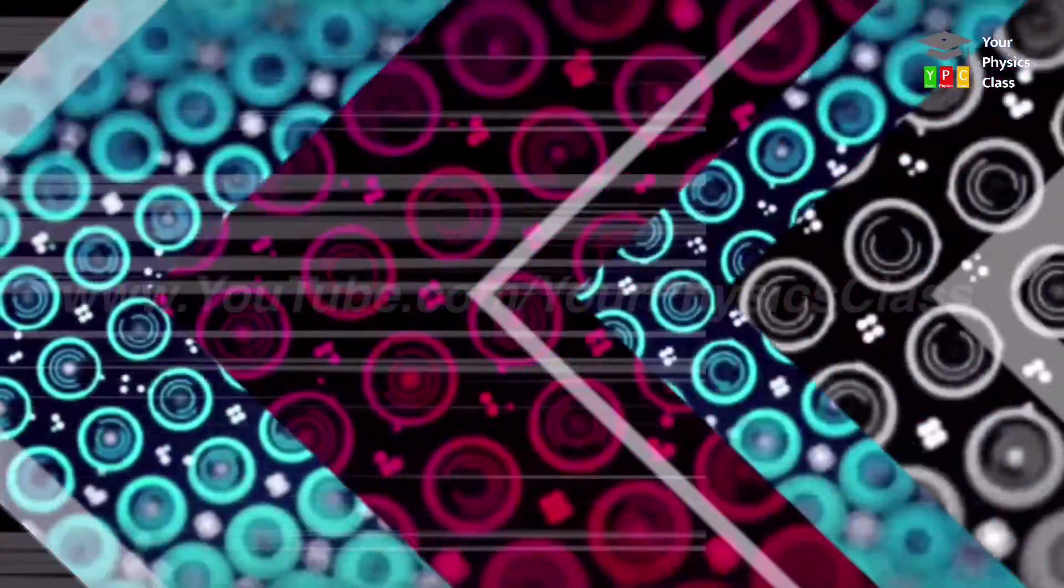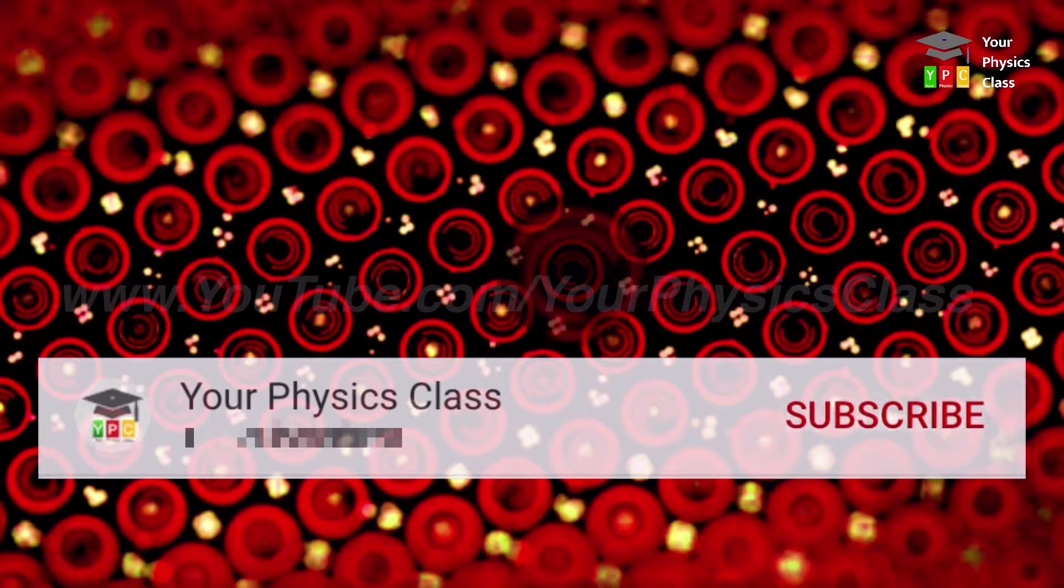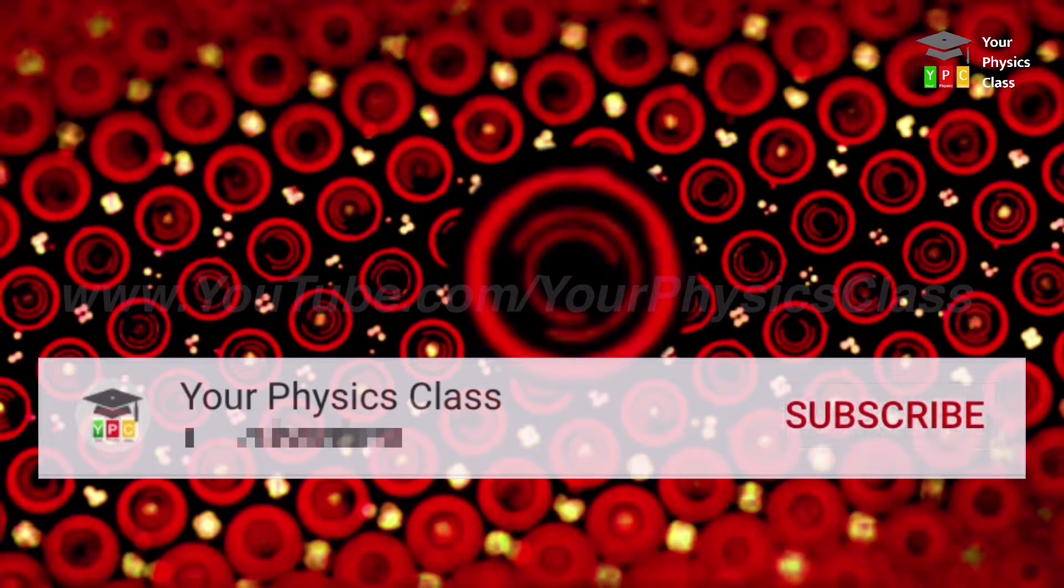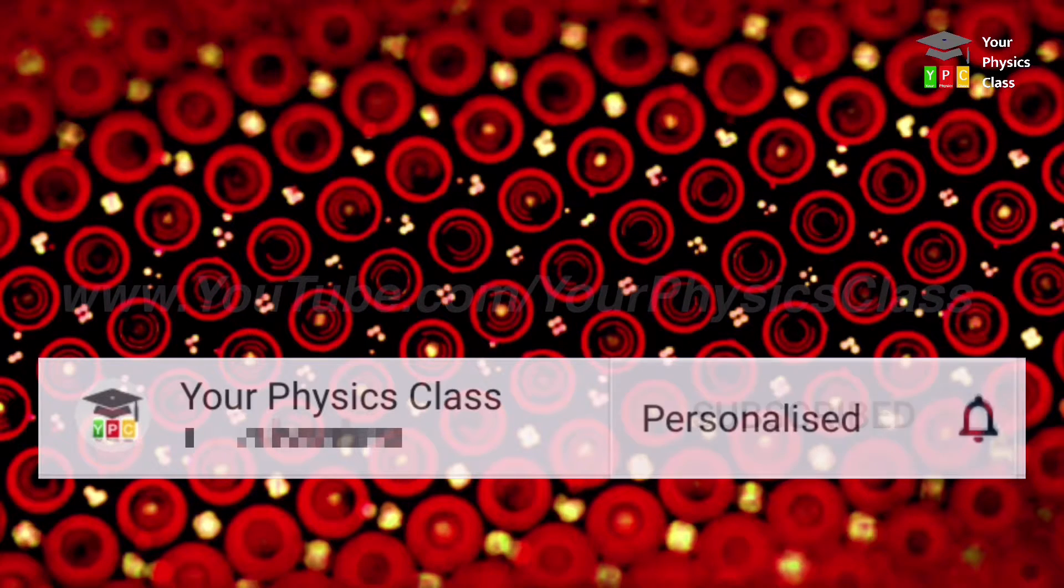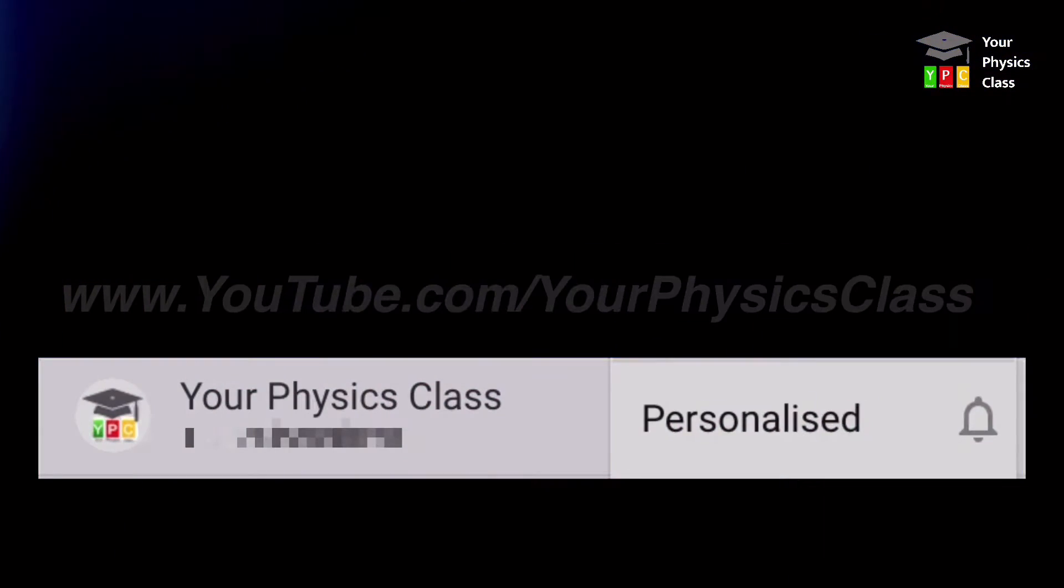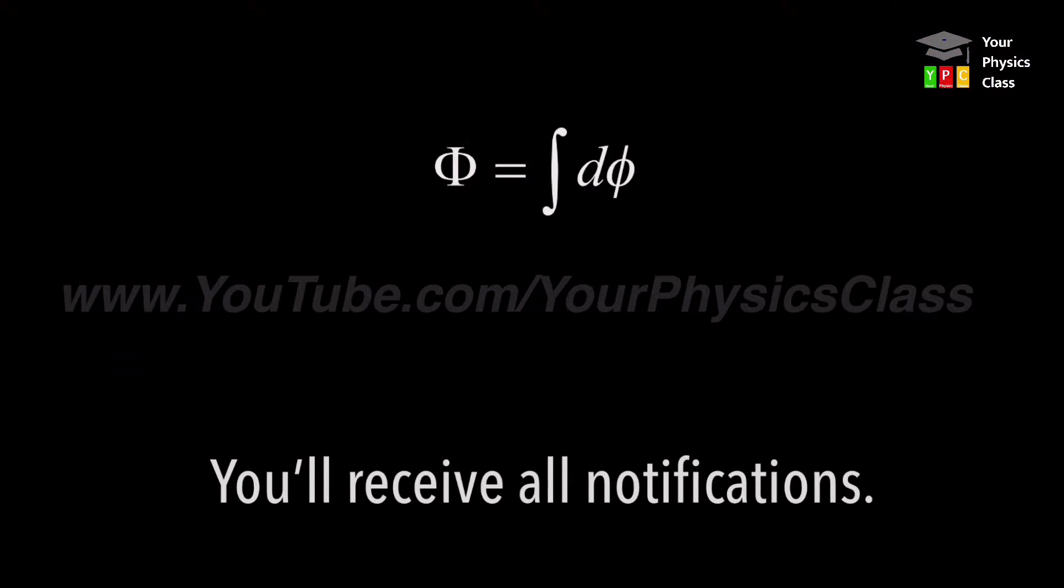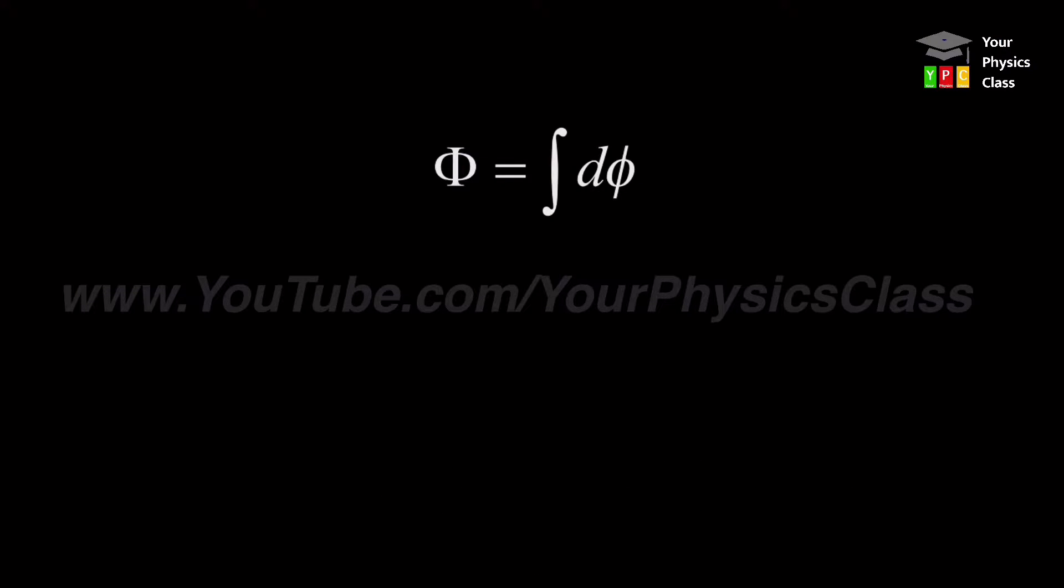The total flux through entire surface area. Now think that this dS is part of a very big area. Now how much flux goes through this entire area? So we need to integrate the electric flux.